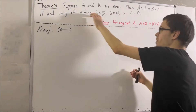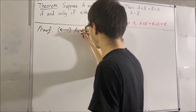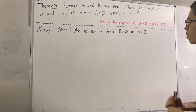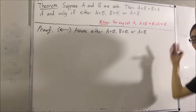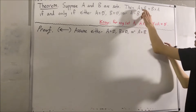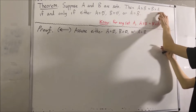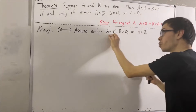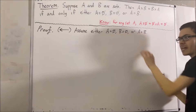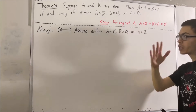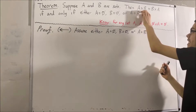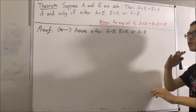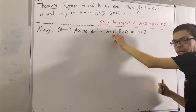So, assume the condition is true. Our whole goal at this point is to deduce that A times B is equal to B times A. We have three cases to consider, and in all three cases, we are going to prove that A times B is equal to B times A. Let's start with case one: A is equal to the empty set.